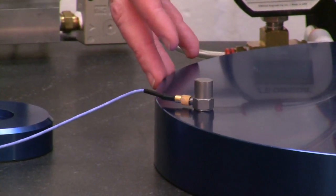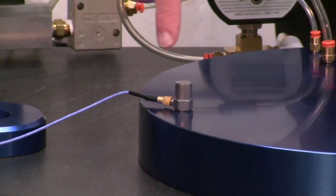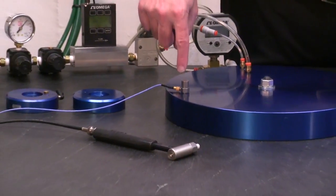We've laid the bearing down on its face, and we have an accelerometer on the back of the bearing. It's directly over the air bearing land.